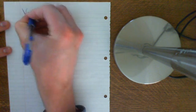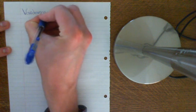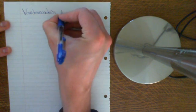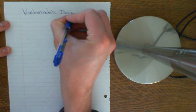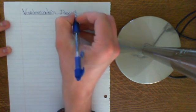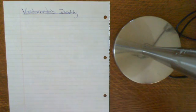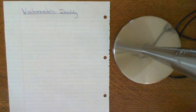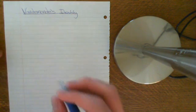Okay, so Vandermond's identity then. Is this pen working? Yes, it is. Vandermond's identity. And this isn't just used in probability. It's an important result in combinatorics, and it's got applications in other areas of maths. Vandermond's identity.